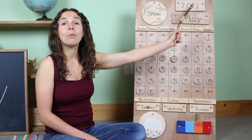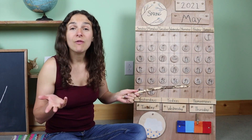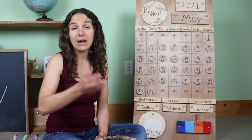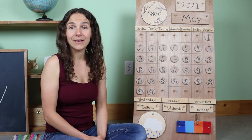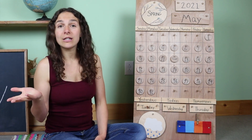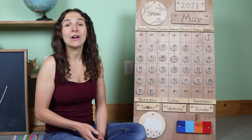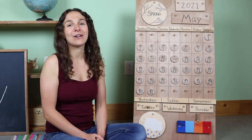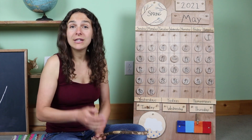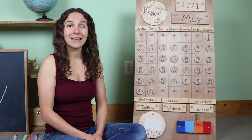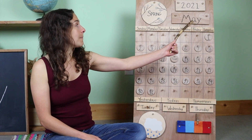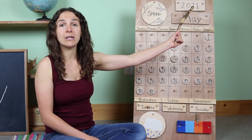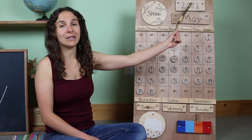Right up here we have the year. Friends, there are two ways that you can say the year. Can you say one of the ways? 2021. But you can also say that the year is 2021. Both ways are correct. Will you say the date with me one more time? Today is May 12th, 2021 — or twenty twenty-one.